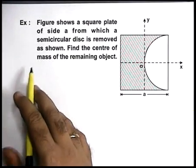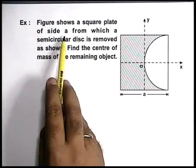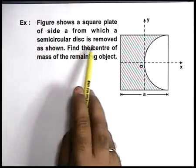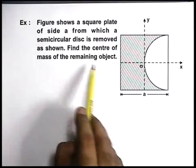In this example, it is saying figure shows a square plate of side a, from which a semi-circular disc is removed as shown, and we are required to find the centre of mass of the remaining object.